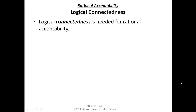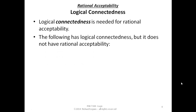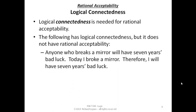We agree that for an argument to be rationally acceptable, and for it to make the conclusion rationally acceptable, a high degree of logical connectedness between the premises and the conclusion is necessary. It's required, but it's not sufficient — it's not enough, because you need something else. The following example shows a case where we have logical connectedness, but the argument doesn't have rational acceptability.